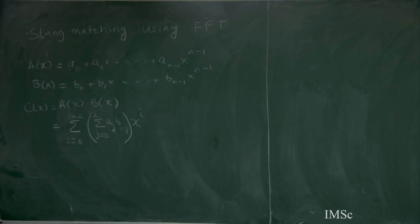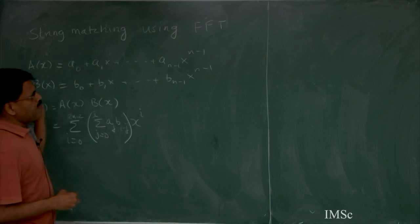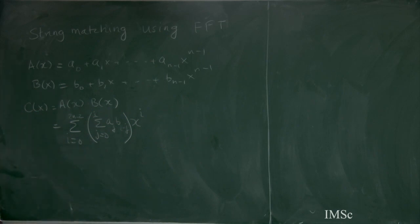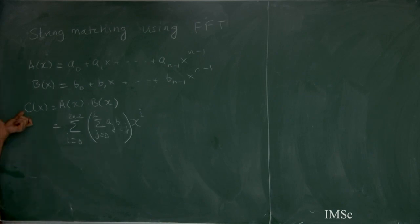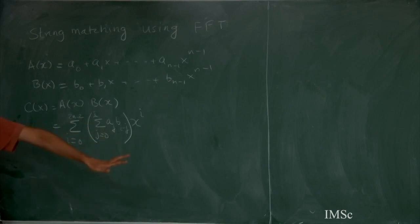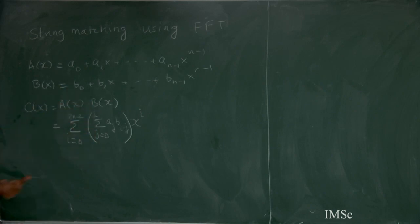A naive way of computing this product would take n-squared time, but we managed to do it in n log n time. We evaluated these two polynomials on the 2n-th roots of unity, which can be done in n log n time using divide and conquer, then computed the product pointwise.